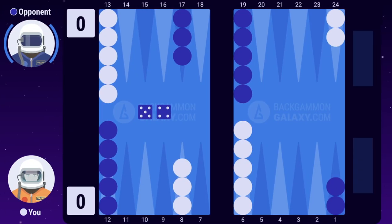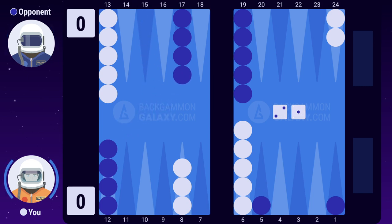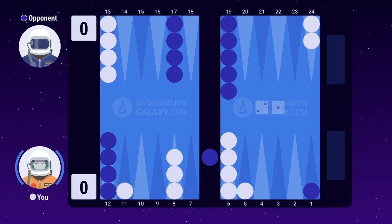This is an example of a typical opening game. You need to fight for your key points, especially the 5 point. The best play is the aggressive 6-5 hit and 13-11 to bring an extra builder down to the 11 point.